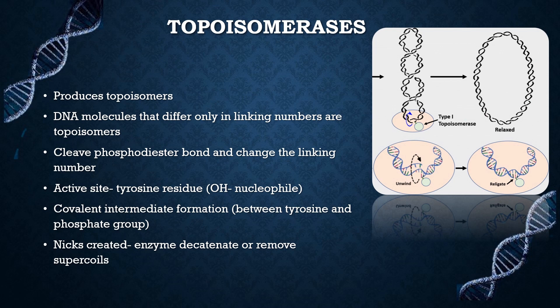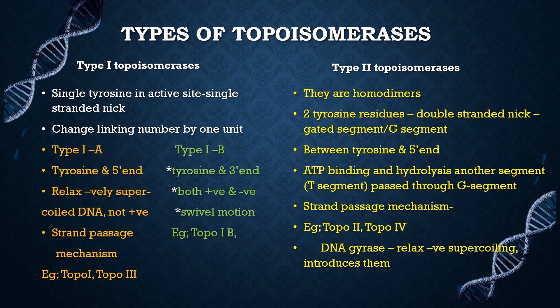Topoisomerases produce topoisomers. DNA molecules that differ only in linking number are called topoisomers. Topoisomerases cleave the phosphodiester bond and change the linking number. The active site of this enzyme contains a critical tyrosine residue whose hydroxyl group (–OH) functions as a nucleophile attacking the phosphodiester bond in DNA. It forms a covalent intermediate by an ester linkage between tyrosine and the phosphate group. Through gaps in the duplex, the enzyme can decatenate or remove supercoils.